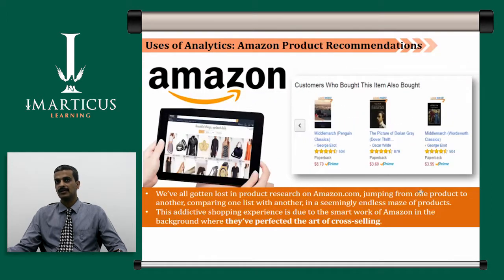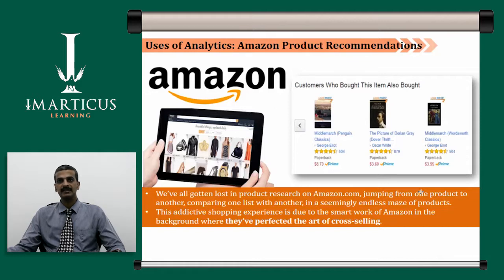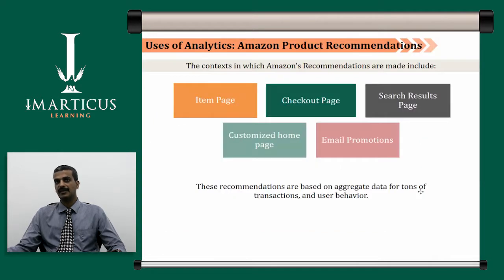Amazon, one of the biggest online retailers, uses analytics widely to push you toward products you haven't bought based on patterns identified in your historical data. We have all gotten lost in product research on amazon.com, jumping from one product to another and comparing listings in a seemingly endless maze of products. This addictive shopping experience is due to Amazon perfecting the art of cross-selling. The context in which recommendations are made includes the item page visited, the checkout page, the search result page, the customized homepage, and email promotions. These recommendations are based on aggregate data from tons of transactions and user behavior.